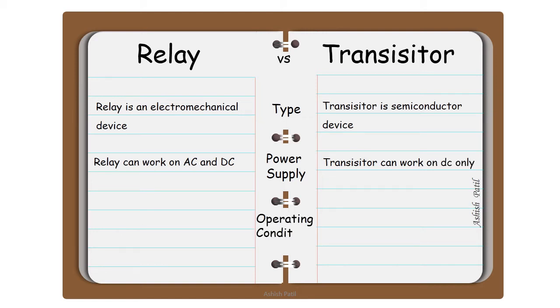Operating condition. Relay can operate at extreme temperatures. Transistor can operate up to 95 degrees Celsius and little below 0 Celsius.